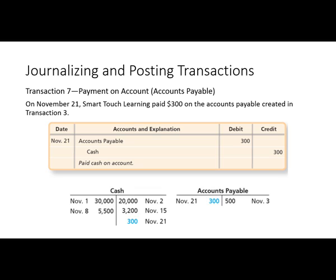Accounts payable has a natural credit balance. You can see on November 3rd we had $500 in the account. And then here we're on the 21st, debiting $300 to the account, functionally decreasing accounts payable. A lot of students will have trouble with that, but it really is just a matter of we don't owe $500 anymore — we just paid $300.